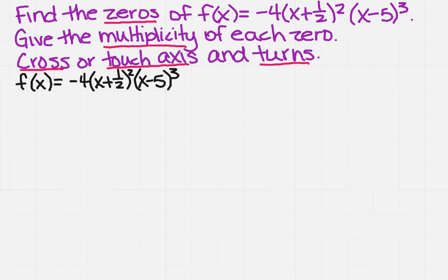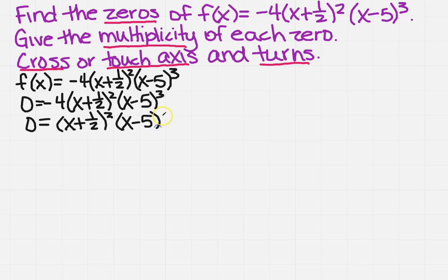First we need to find those zeros. So I'm going to plug in a zero for f(x) and copy down everything that's on the right hand side. And once I've done that I want to get rid of that negative four because it's not helping me at all. So then I would have zero equals with left in my parentheses on both sides. So without that minus four it looks way easier to solve.